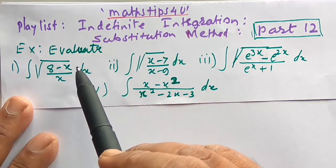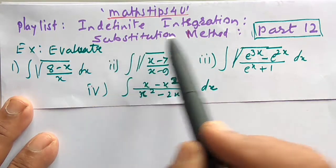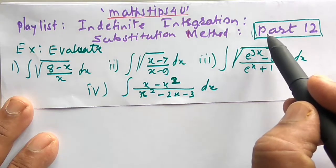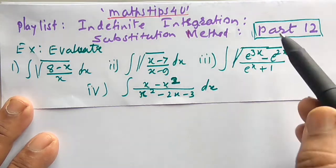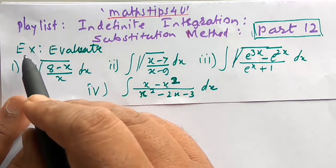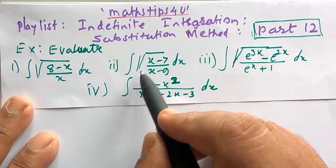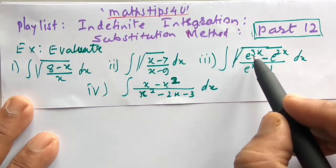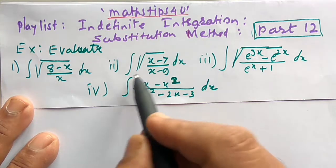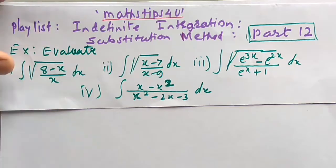Hello friends and students, once again welcome to my channel Math Tips for You. We are studying indefinite integrations and the method is substitution method. I have created a playlist of indefinite integrations and this is video part 12. We shall see a few typical examples: number one, integration of √((8−x)/x) dx; number two, integration of √((x−7)/(x−9)); number three, integration of √((e^(3x) − e^(2x))/(e^x + 1)); number four, integration of (x − x²)/(x² − 3x − 3) dx.